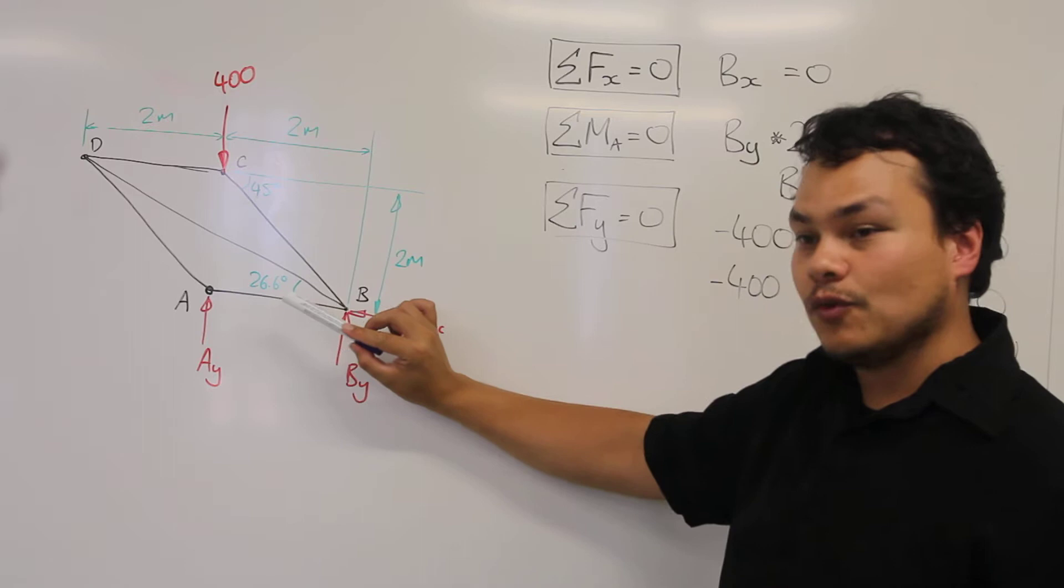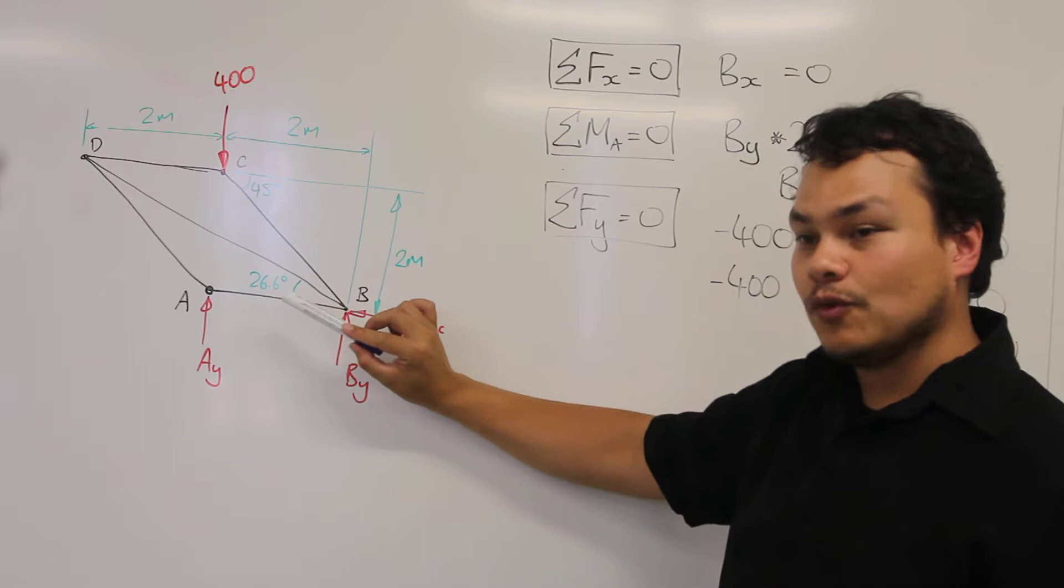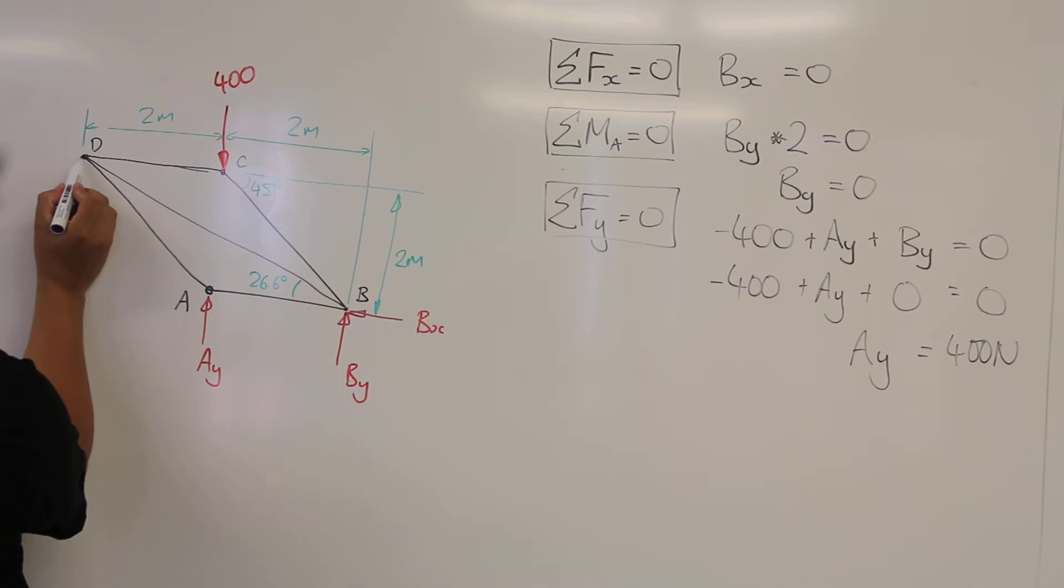The way that I've found this angle is there is a triangle visible in this section here. One, two, and three. I'll redraw it. So, the base has a length of 4 and this of 2, and here we have our angle theta.